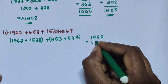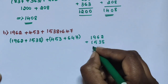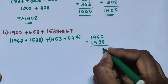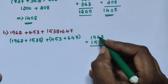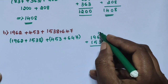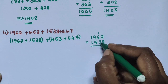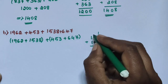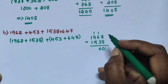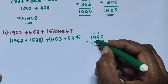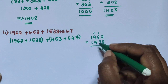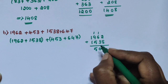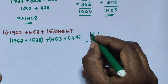First group: 1962 plus 1538. 2 plus 8 is 10, write 0, carry 1. 1 plus 6 is 7, 7 plus 3 is 10, write 0, carry 1. 1 plus 9 is 10, 10 plus 5 is 15, write 5, carry 1.